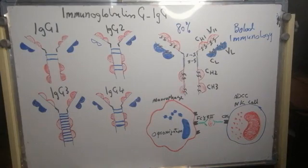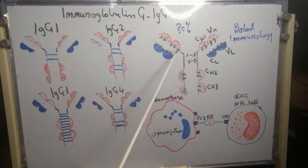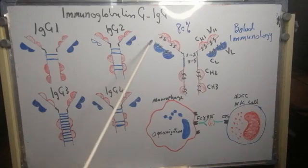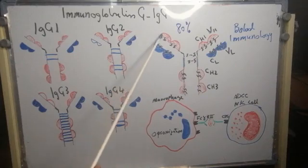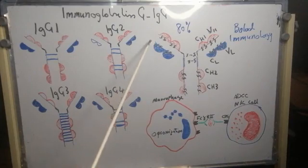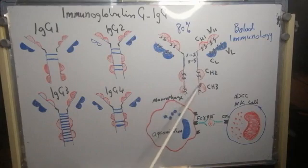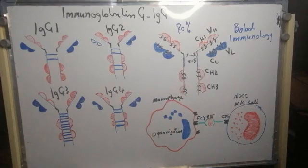The hinge region allows segmental flexibility of IgG molecules, so IgG can perform two functions at the same time. For example, it captures an antigen or bacteria with the Fab fraction, while the crystalloid fraction can interact with the complement component.